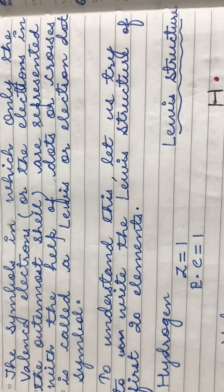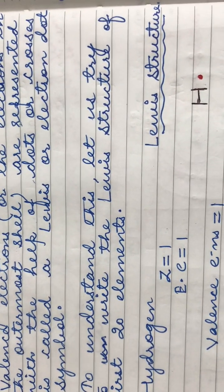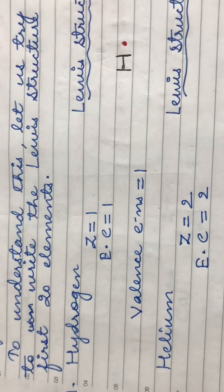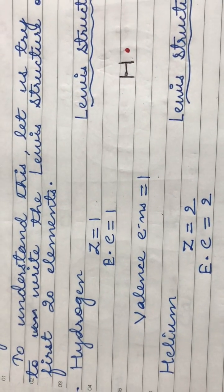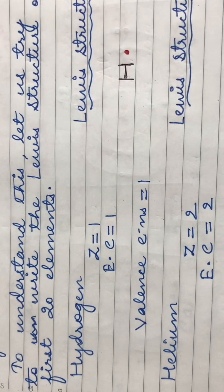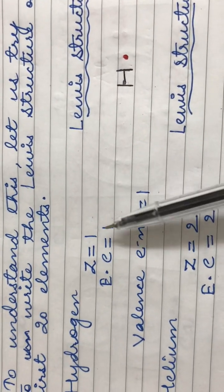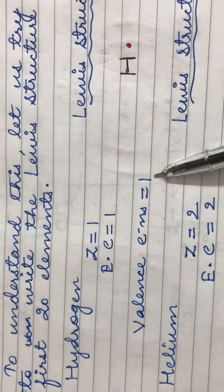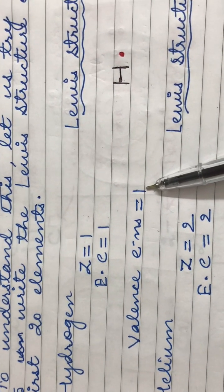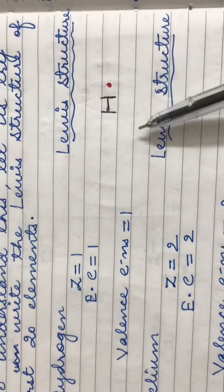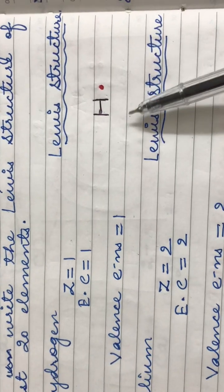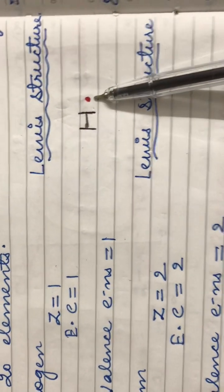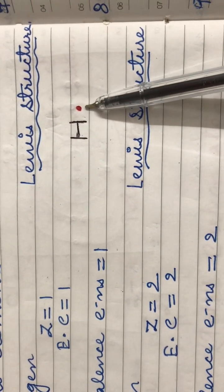To understand this, let us try to write the Lewis structure of the first 20 elements. The first element is hydrogen. It has an atomic number of one. Its electronic configuration is also one, so it has one electron in its valence shell. Therefore, the Lewis structure for hydrogen would be the symbol H and one dot for its one valence electron.